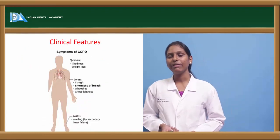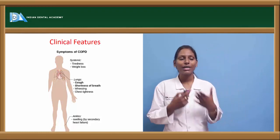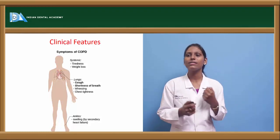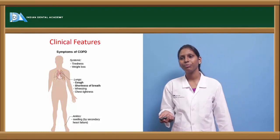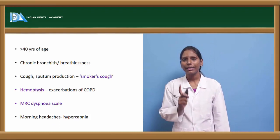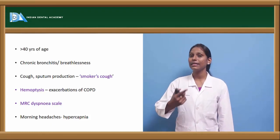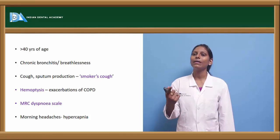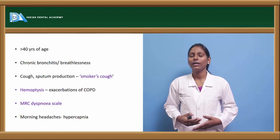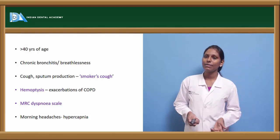Coming to clinical features of COPD, patients will have tiredness, weight loss, cough, shortness of breath, and wheezing. COPD has a characteristic wheezing sound similar to asthma. Chest tightness and ankle swelling due to secondary heart failure can also be seen. It is usually seen in patients over 40 years of age. Chronic bronchitis with sputum production — called a smoker's cough — is a common feature. Haemoptysis can be seen in exacerbated COPD. Morning headaches due to hypercapnia can also occur. Dyspnea can be graded using the MRC dyspnea scale.